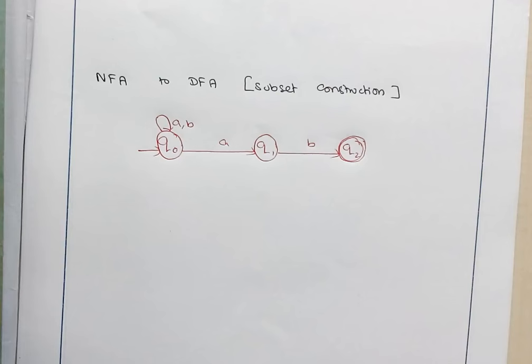The reason why we want to convert an NFA to DFA is to prove that NFA and DFA are equivalent. When you consider a language, if you can construct an NFA for that language, then surely there exists a DFA for the same language. So we say that NFA and DFA are equivalent.